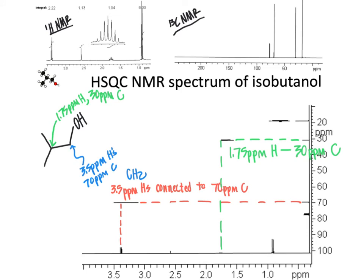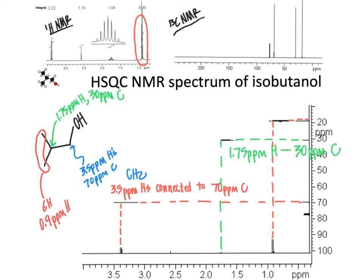Looking at the doublet at about 0.9 ppm, following that up and over to the y-axis, that signal is at about 20 ppm. In the proton spectrum, the 0.9 ppm signal integrated to six, which corresponds to the two methyl groups in isobutanol. So the proton signal at 0.9 ppm represents those six equivalent methyl protons, and the carbon directly bonded to them is at about 20 ppm.